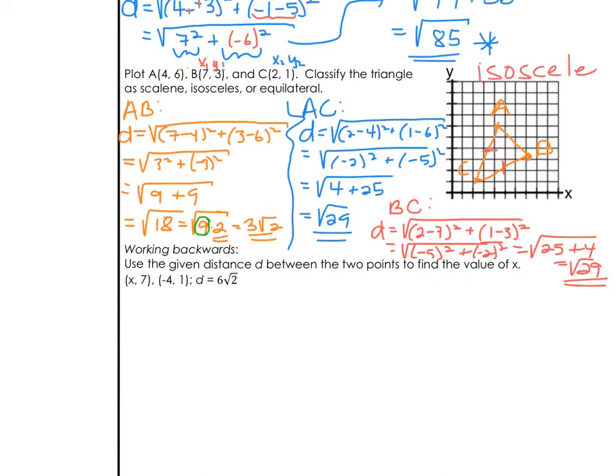I hope that you remember that from geometry last year. Two of the three sides are the same, therefore, it's isosceles. Now let's try working backwards.